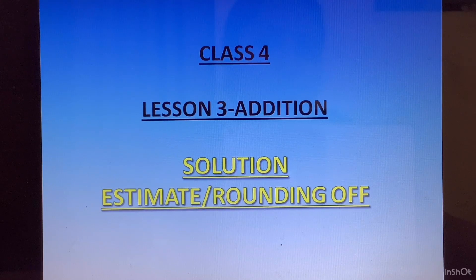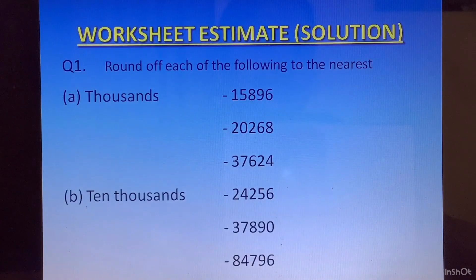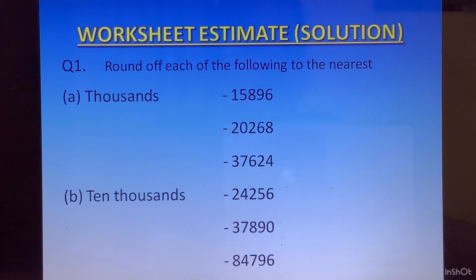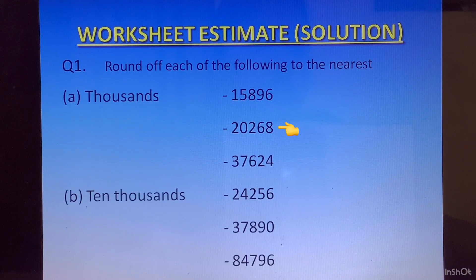Welcome students to Class 4 Lesson 3 Addition Solutions to the Worksheet on Estimate and Rounding Off. Question 1: Round off each of the following to the nearest thousands. The numbers were 15896, 20268, and 37624.